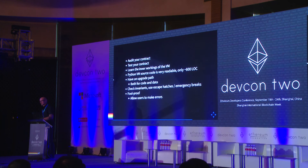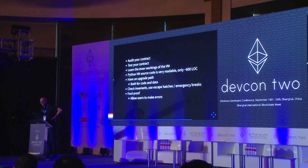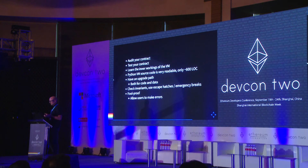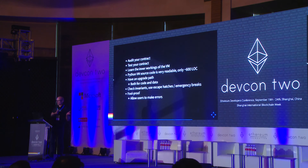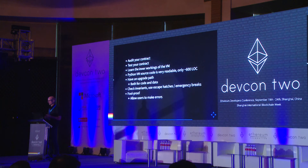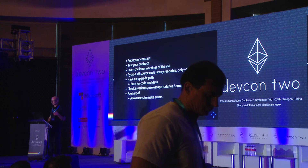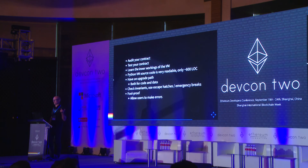For building contracts: auditing and testing is very important. You need to learn the inner workings of the EVM — I'd recommend starting with the Python VM source code, which is very small at around 600 lines of code. Try to have an upgrade path — not only for the code in your contracts but potentially also for all your data, and think about how you move that data into the next version of your contract. Check your invariants, have escape hatches, emergency breaks, and try to make things foolproof so even non-technical users can use them and can make errors without catastrophic results.